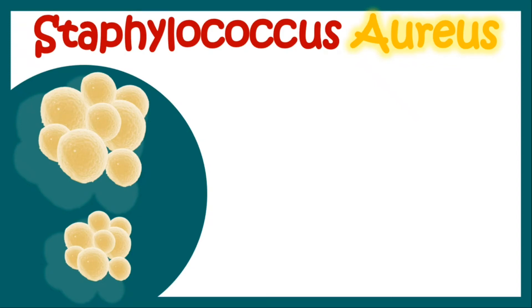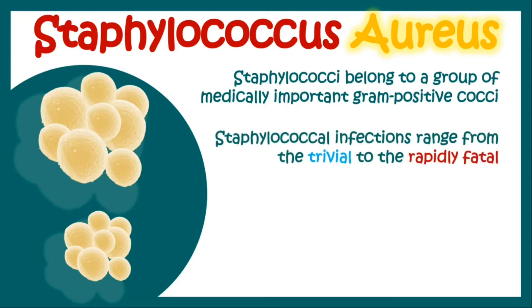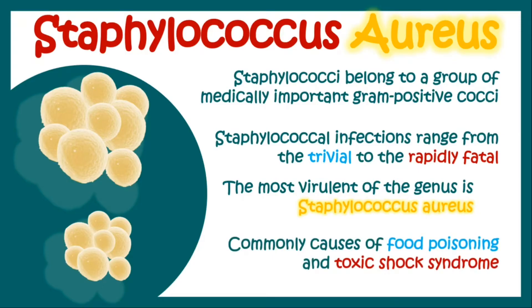Hello everyone, the Nord Medic here. In this video we will talk about a microbe known as Staphylococcus aureus. Staphylococcus belongs to a group of medically important gram-positive cocci. Staphylococcal infections range from trivial infections to some life-threatening, rapidly fatal infections. The most virulent of this genus is Staphylococcus aureus, and it commonly causes food poisoning and toxic shock syndrome. This video will be a brief overview and will serve as a rapid revision tool for your exams.